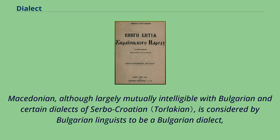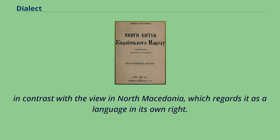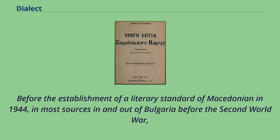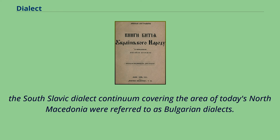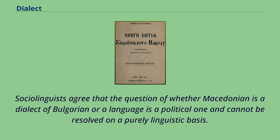Macedonian, although largely mutually intelligible with Bulgarian and certain dialects of Serbo-Croatian, is considered by Bulgarian linguists to be a Bulgarian dialect — in contrast with the view in North Macedonia, which regards it as a language in its own right. Before the establishment of a literary standard of Macedonian in 1944, most sources referred to the South Slavic dialect continuum covering today's North Macedonia as Bulgarian dialects. Sociolinguists agree that the question of whether Macedonian is a dialect of Bulgarian or a language is a political one and cannot be resolved on a purely linguistic basis.